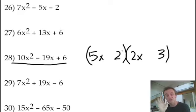5x and 2x, 10x squared. 2 and 3 make 6 when you multiply. Do I get negative 19x? Now, here's again more logic. A 6 at the end. It can come from 2 times 3, but it can come from negative 2 times negative 3.